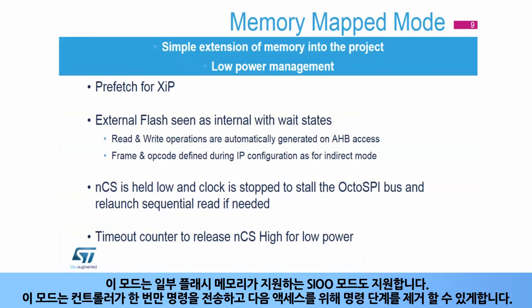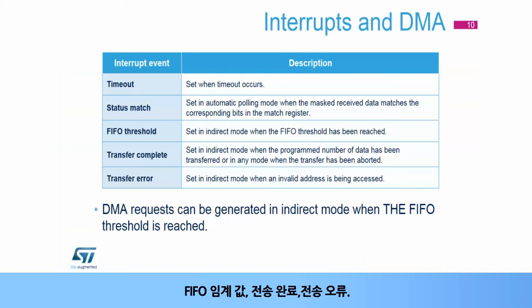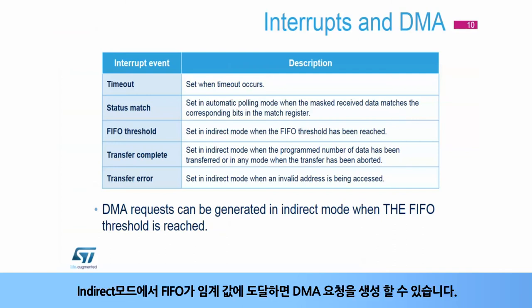This mode also supports SIOO mode, which is supported by some flash memories. It allows the controller to send instructions only once and removes the instruction phase for the following accesses. The OctoSPI has five interrupt sources: time out, status match, FIFO threshold, transfer complete, and transfer error. DMA requests can be generated in indirect mode when the FIFO threshold has been reached.